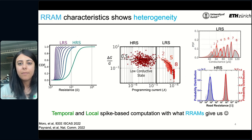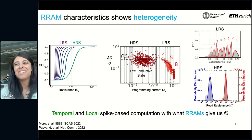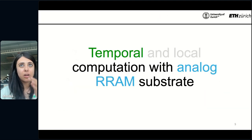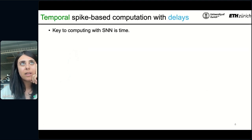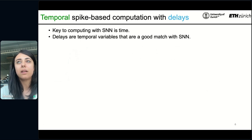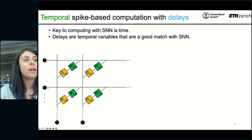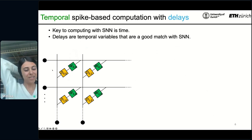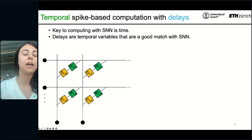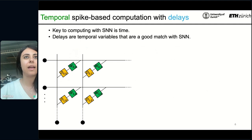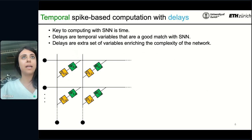The question becomes: how can we do temporal and local spike-based computation with what we get from these RMs? First I'll talk about the temporal part. The key to computing with SNNs is time. Delays are temporal variables that are a good match with spiking networks. If we think of this in terms of crossbar arrays — inputs arrive to the rows, outputs are taken from the columns — instead of just having one weight value, you can also have a delay value. Each synaptic parameter now becomes a delay and a weight value, and these delays are an extra set of variables that enrich the complexity of the network.